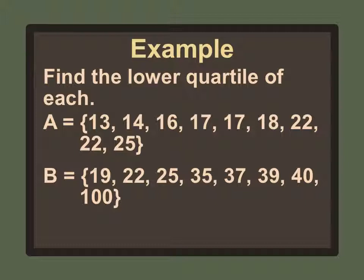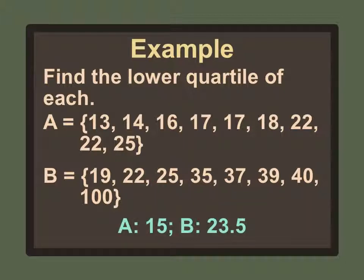Now we find the lower quartile of each. Set A has an odd number of values, so we exclude the median of 17. Looking at 13 through 17, the two middle numbers are 14 and 16, and their average is 15. So the lower quartile for A is 15. For B, which is even, the lower half is between 19 and 35. The middle numbers are 22 and 25, and their average is 23.5.